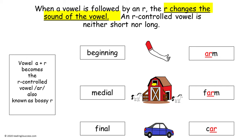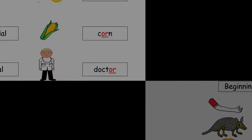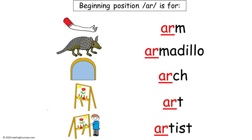In our examples: for the beginning position we see 'arm,' medial is 'farm,' and final is 'car.' Begin by telling kids when A and R come together they make one sound — R. It can be at the beginning of a word. Point to the picture and the word: arm, armadillo, arch, art, and artist. Say it with them and really emphasize the A-R.